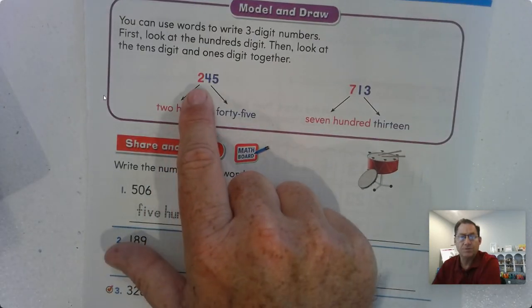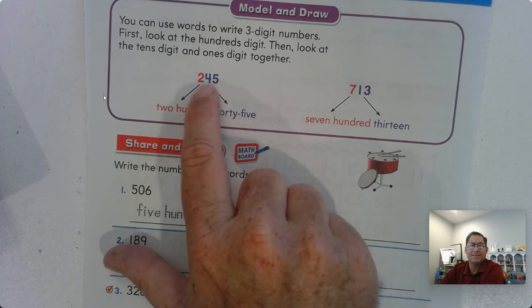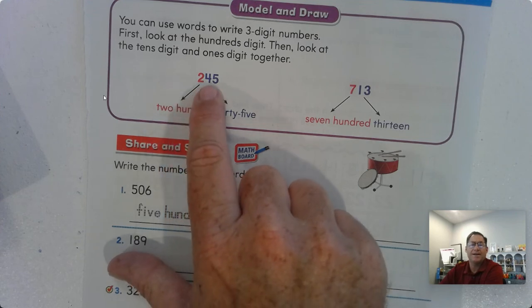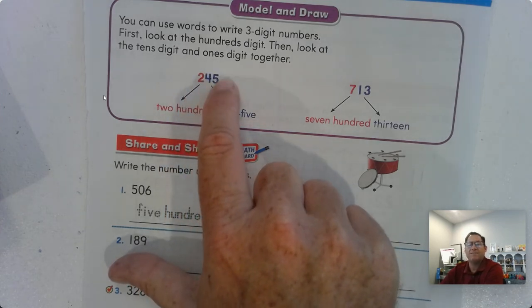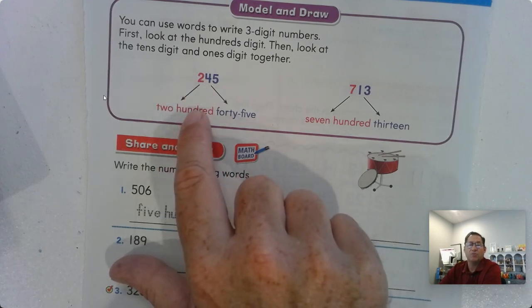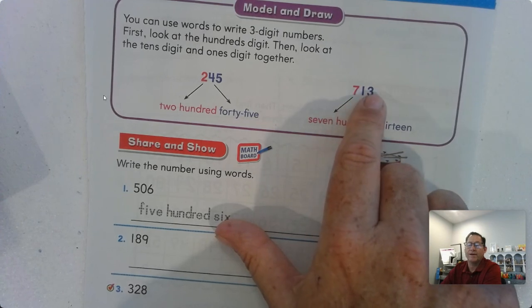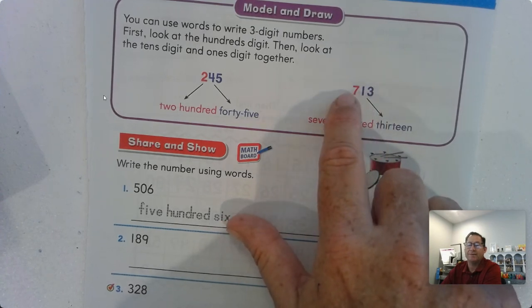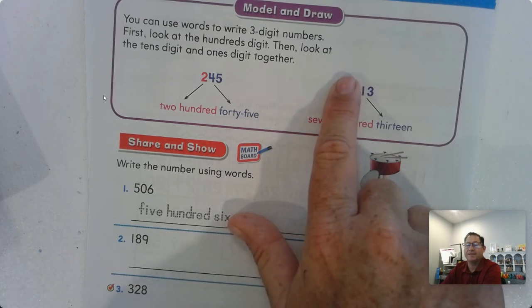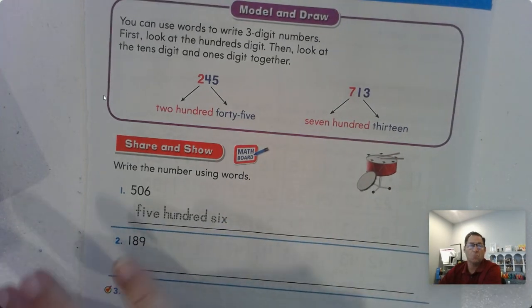So they have this number. We have ones, tens, hundreds. How many hundreds do we have? We have 200. And now look at the four and the five together as a number. That's 45, so we would write 245. Here we have seven, one, three. We have three ones, one ten, and seven hundreds. So we say 700 and then read the tens and the ones together. We have 13. 713.